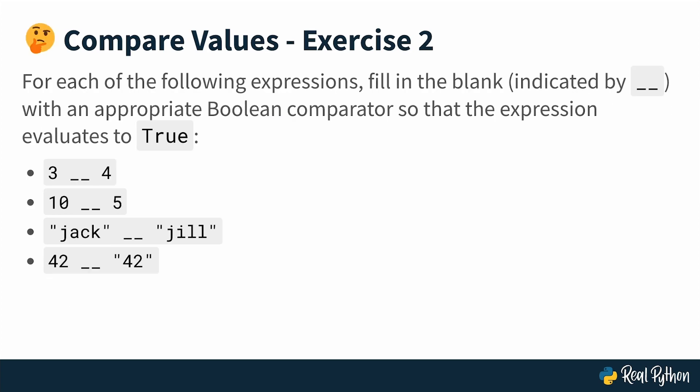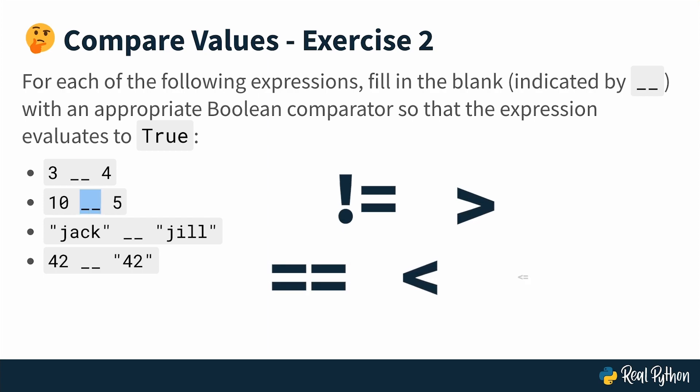The next review exercise says: for each of the following expressions, fill in the blank indicated by two underscores with an appropriate Boolean comparator so that the expression evaluates to true. So we want all of these expressions to evaluate to true, and we're going to replace the two underscores with some sort of Boolean comparator.